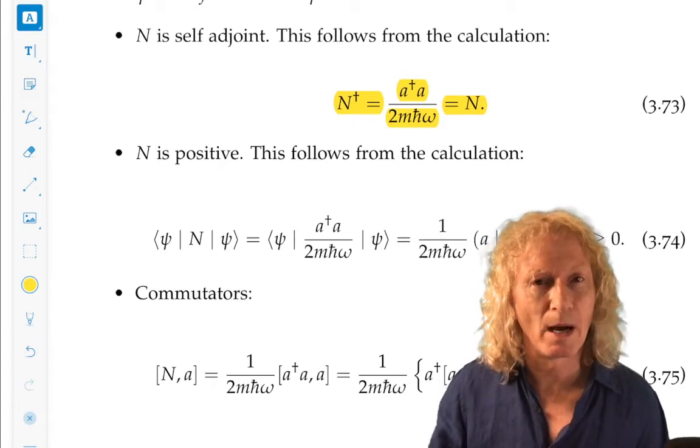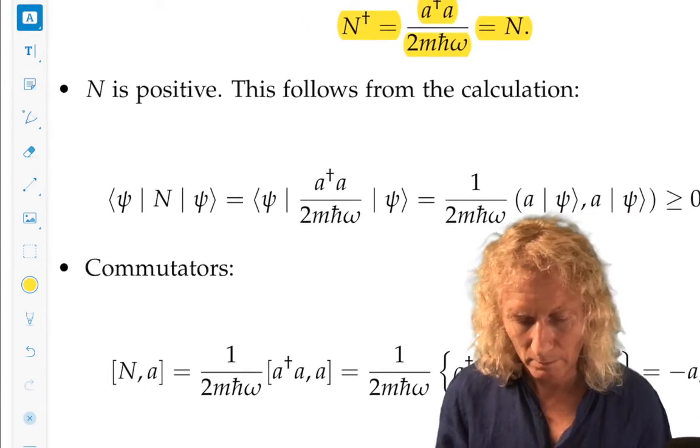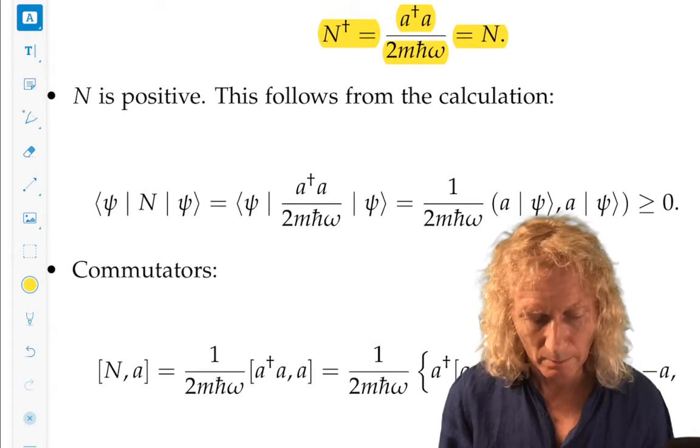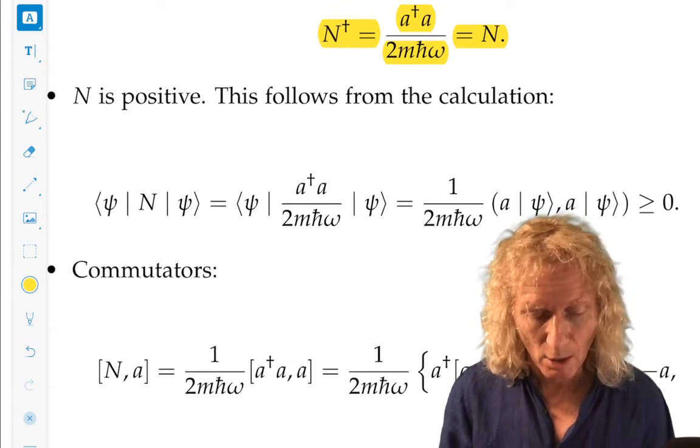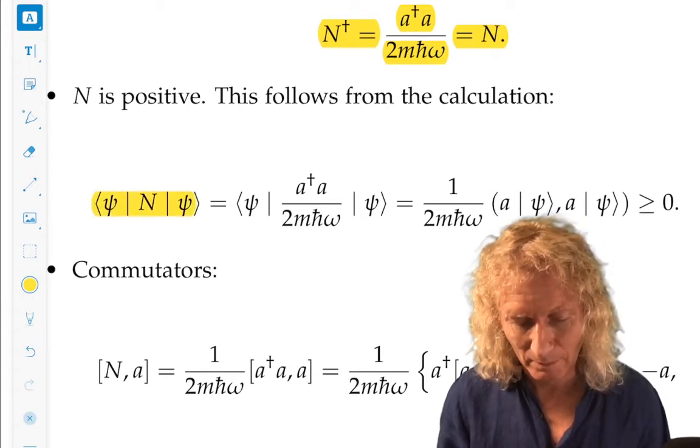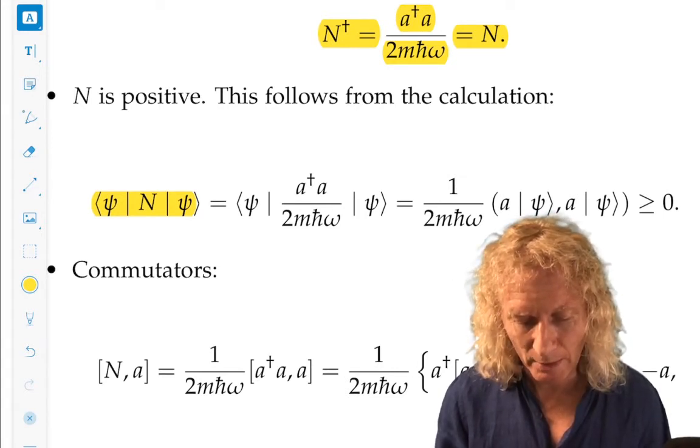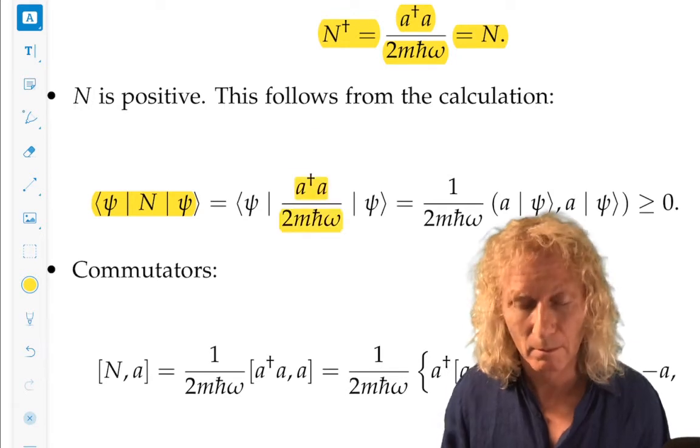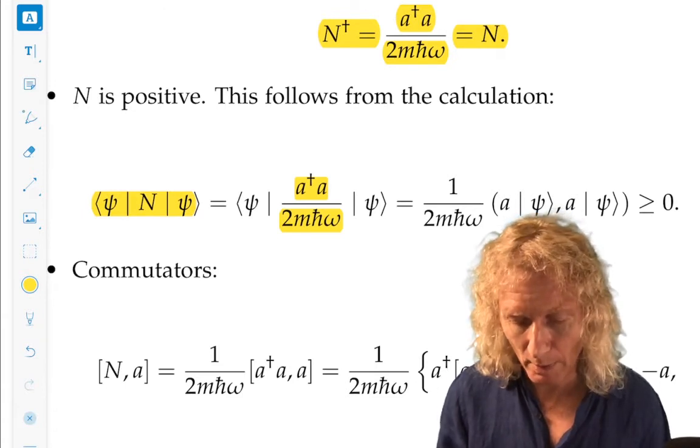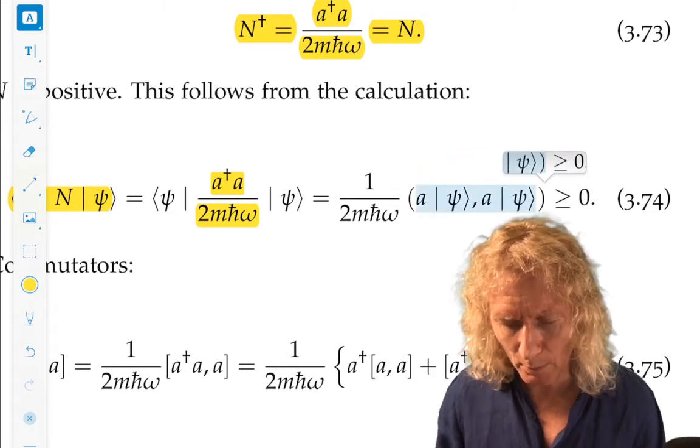Now the number operator is positive. What could I possibly mean by that? Well, here's what I mean by positive. If we look at the expectation value of N, what is that? Forget the or for the moment. That's writing down the definition of N. We can pull out the 1 over 2m h bar omega.